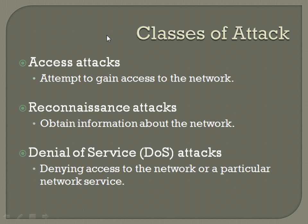Let's start off with talking about the classes of attack. There are three primary classes identified. An access attack is where a hacker is attempting to gain access to a network or network resources they shouldn't have access to. A reconnaissance attack is where you go in and try to obtain information about a network, usually so you can use that information to plan a more orchestrated attack at some point in the future.